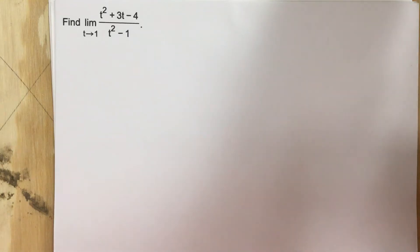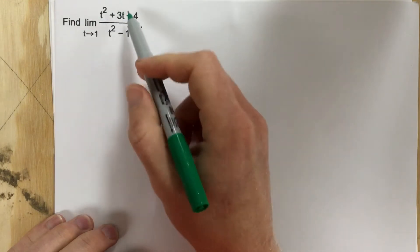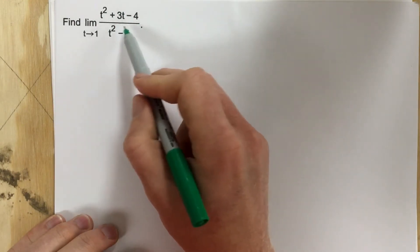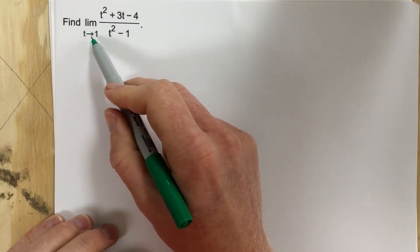This is problem number five from section 2.2. The problem says find the limit of t squared plus 3t minus 4 over t squared minus 1, and we want to find the limit as t approaches 1.